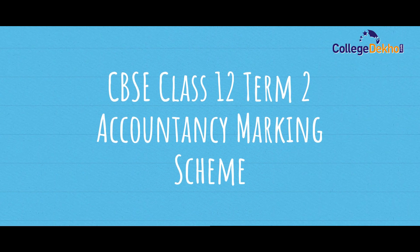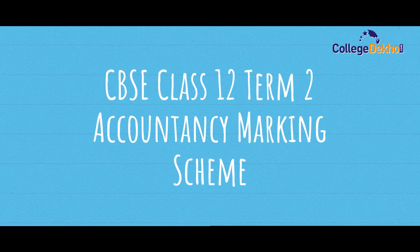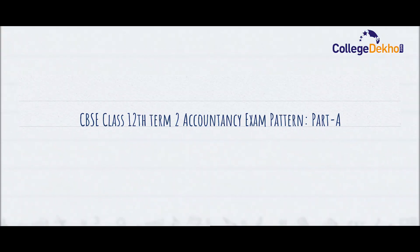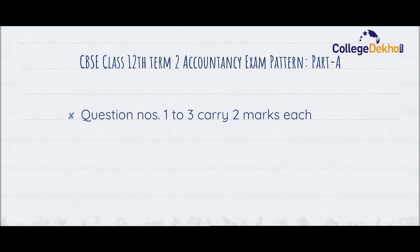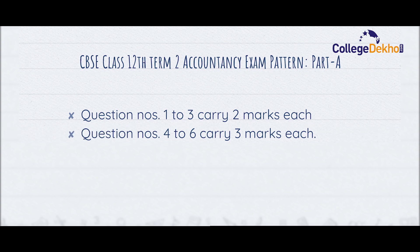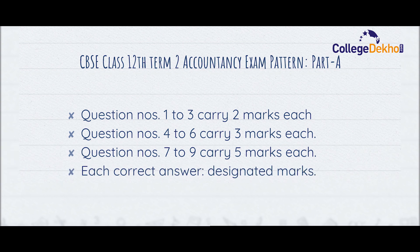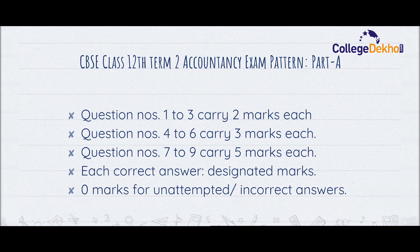Now that we are done with the exam pattern, let us look at the marking scheme for the CBSE Class 12th Accountancy paper. For Part A: question numbers 1 to 3, which are Short Answer Type 1, will carry 2 marks each. Question numbers 4 to 6, Short Answer Type 2, will carry 3 marks each, and the Long Answer questions will carry 5 marks each. Each correct answer will have designated marks, and zero marks will be awarded for unattempted or incorrect answers.